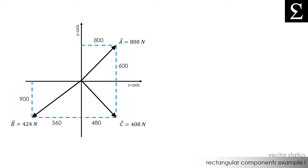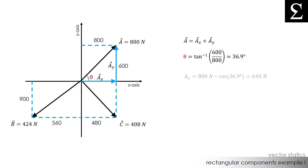If we take a look at vector force A first, we see that the rectangular components we are trying to find are simply the AX and AY vectors. These are the force components of force A. In order to find the magnitude of AX and AY, we need to know this angle theta. Using simple trigonometry, angle theta is calculated as the tangent inverse of 600 divided by 800, which is about 36.9 degrees. We can find the magnitude of the AX component by multiplying 800 newtons by cosine of 36.9 degrees, which is calculated to be 640 newtons.